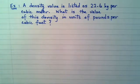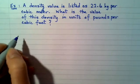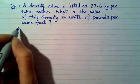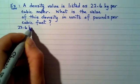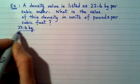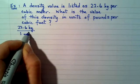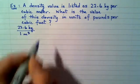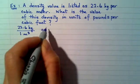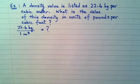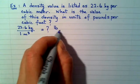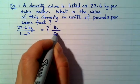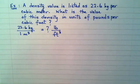To summarize the question, we're being asked to take this value of 22.6 kilograms in one cubic meter (m³) and we're asked to determine what value would this be in different units, and those units would be pounds (lb) per cubic foot.